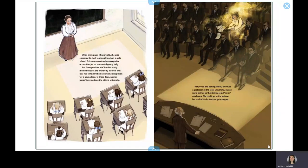When Emmy was 18 years old, she was supposed to start teaching French at a girls' school. This was considered an acceptable occupation for an unmarried young lady. But Emmy decided she'd rather study mathematics at the university instead. This was not considered an acceptable occupation for a young lady.